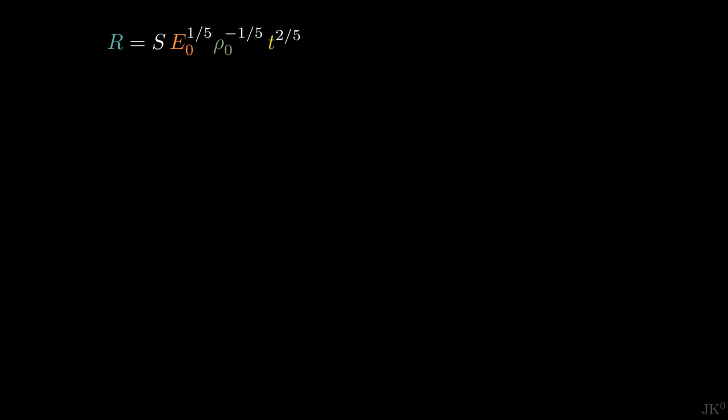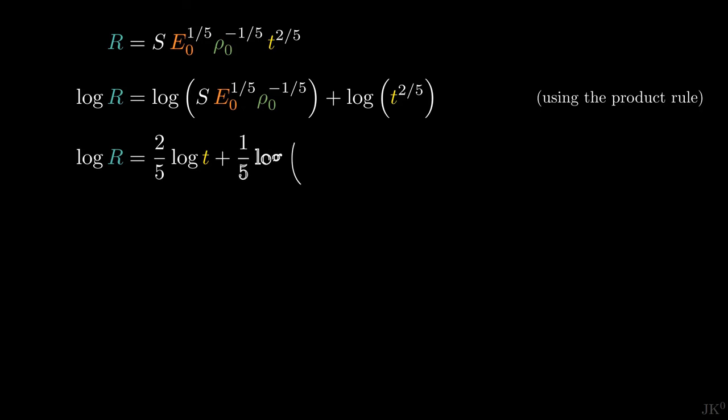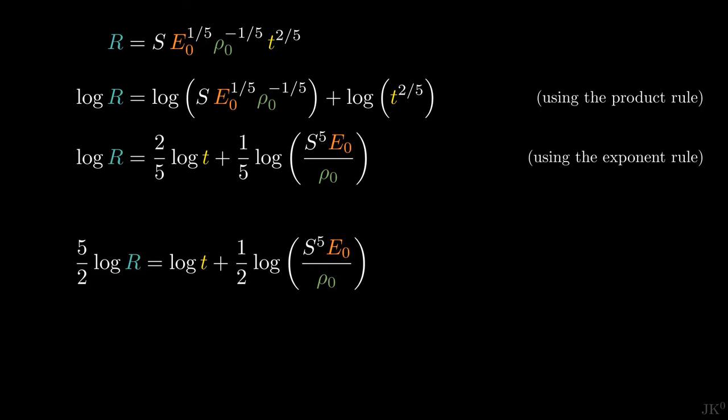Going back to Taylor's formula, if we take logarithms on both sides, we get log of R on the left and log of everything else on the right. Using the product rule, we can separate time from everything else. Now we can rearrange terms and use the exponent rule, so that the logarithm of t to the two-fifths becomes two-fifths of logarithm of t plus everything else. If we now multiply everything by 5 divided by 2, we get 5 divided by 2 times log of R on the left and log of t plus a bunch of terms on the right.